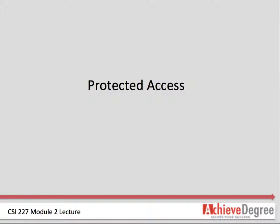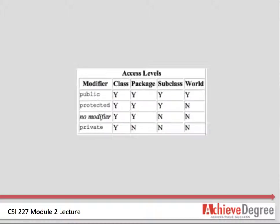Protected access allows access from the class, the package, and subclasses, but not the world. This gives more security than public with fewer restrictions than private. Without protected access, inheritance would need superclass items to be less restrictive. In other words, protected access allows subclasses to access their superclass methods without having to open up those methods to public access. This table shows the access to members permitted by each modifier.